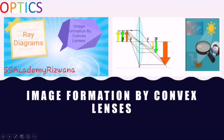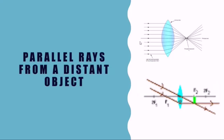Number one: parallel rays from a distant object. When parallel rays from a distant object fall on the convex lens, they converge at a point which is known as the principal focus. Kindly note that these parallel rays are parallel to the principal axis as well.